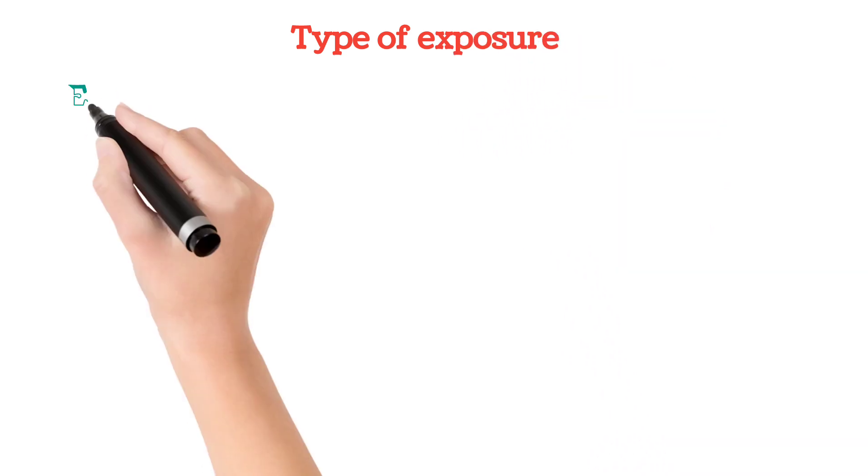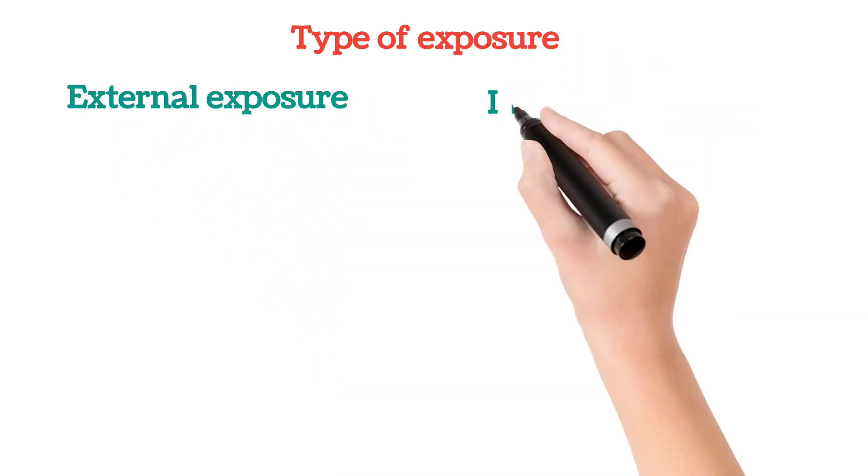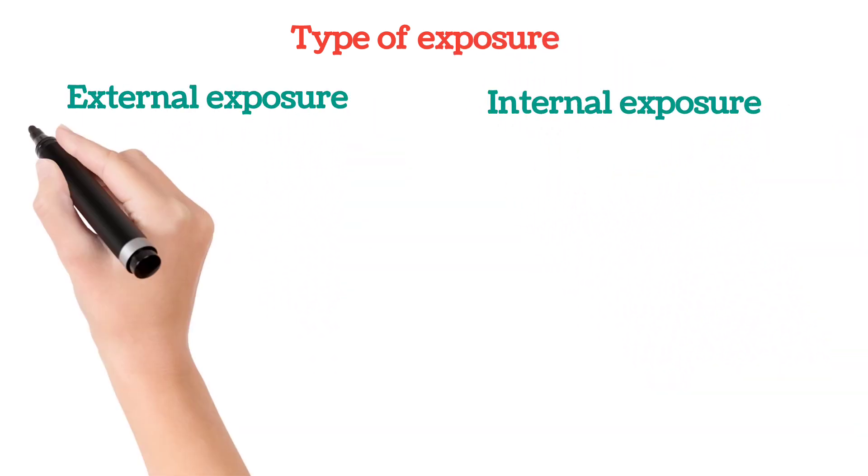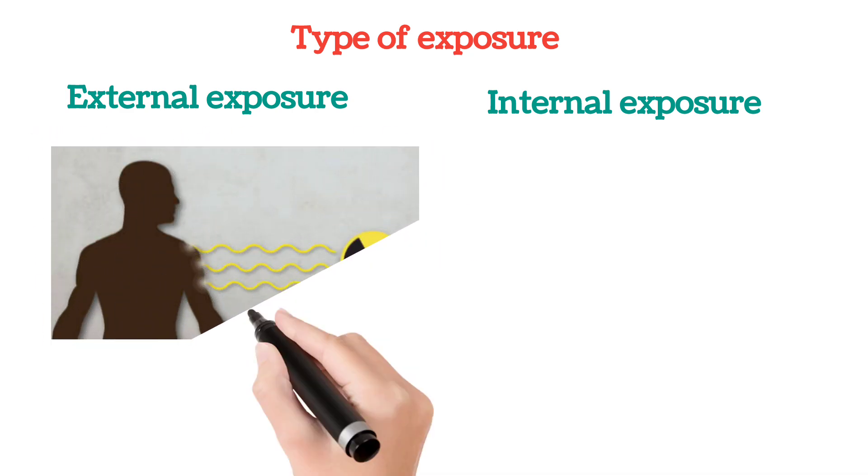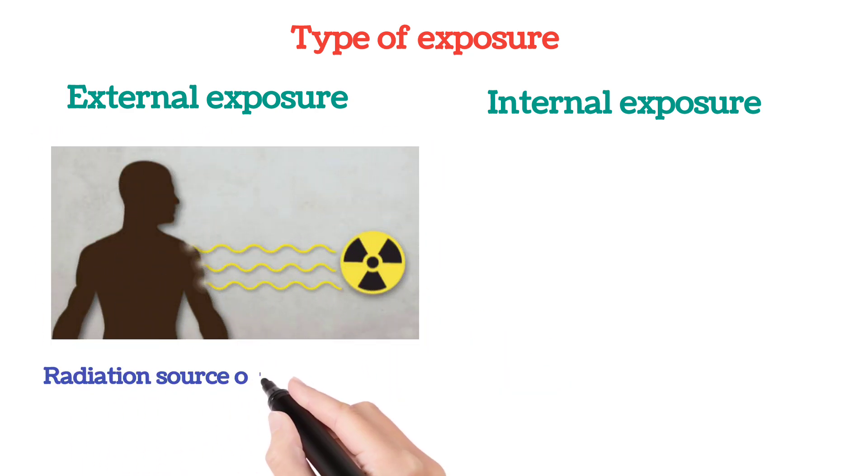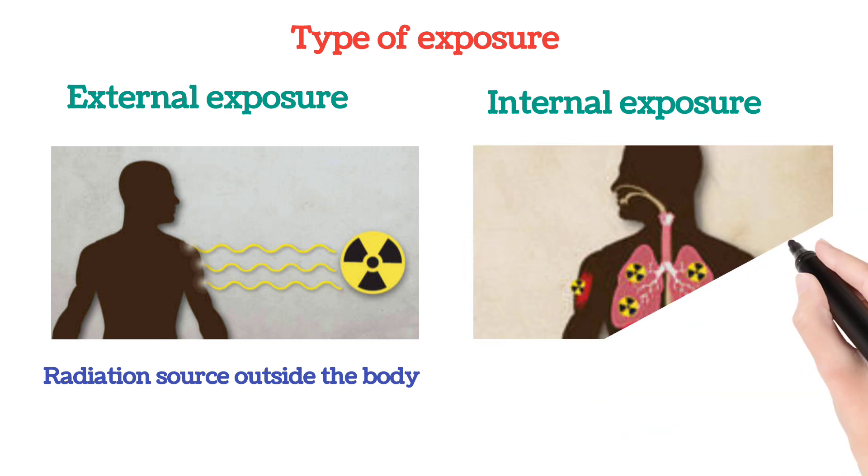There are two types of exposure: external exposure and internal exposure. In external exposure, the radiation source is outside the body. In internal exposure, the radiation source is inside the body.